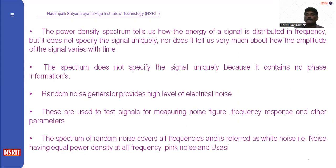The spectrum does not specify the signal unequally, nor does it tell us much about how the amplitude of the signal varies with time, because it contains low phase information. The random noise generator provides a high level of electrical noise, and these are used to test signals for measuring the noise figure, frequency response, and other parameters.